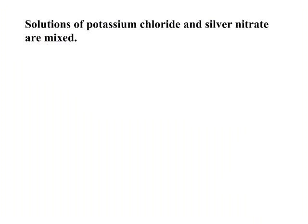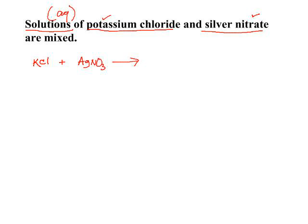Let's look at a simple reaction and take it through a molecular equation, a complete ionic, and a net ionic. These are all aqueous solutions, so they're all in water solution. Potassium chloride would be soluble because of the potassium ion. Silver nitrate would be soluble because of the nitrate ion. Writing the molecular equation, we write potassium chloride and silver nitrate, and then predict the products — silver chloride and potassium nitrate. This is our molecular equation, and it's all nicely balanced.